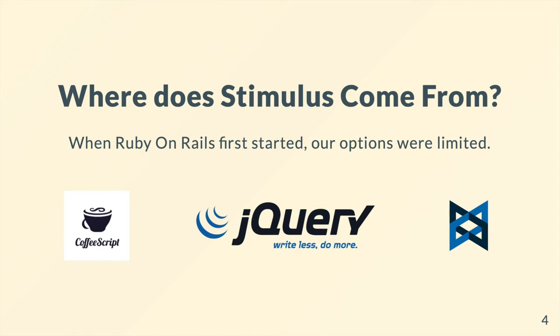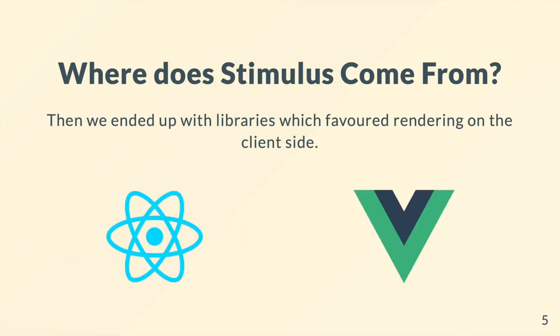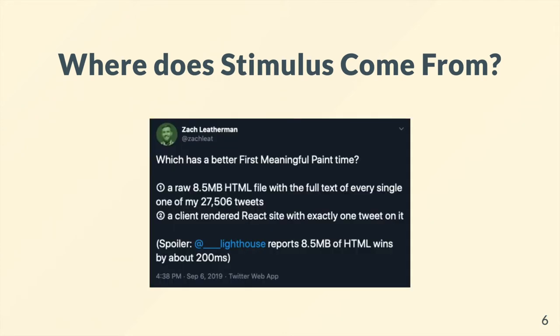We also had the early days of frameworks such as Backbone and others, maybe even Ember, but they didn't really get a good footing in. Then fast forward to modern days, we have React and Vue, and they're great but they favour a lot of rendering on the client side. The big drawback of that for me is it's not as quick as just firing HTML down the pipe to the user and having the browser render it. Browsers are really good at rendering HTML and CSS quickly, and doing a lot with JavaScript is not a good idea in my opinion.